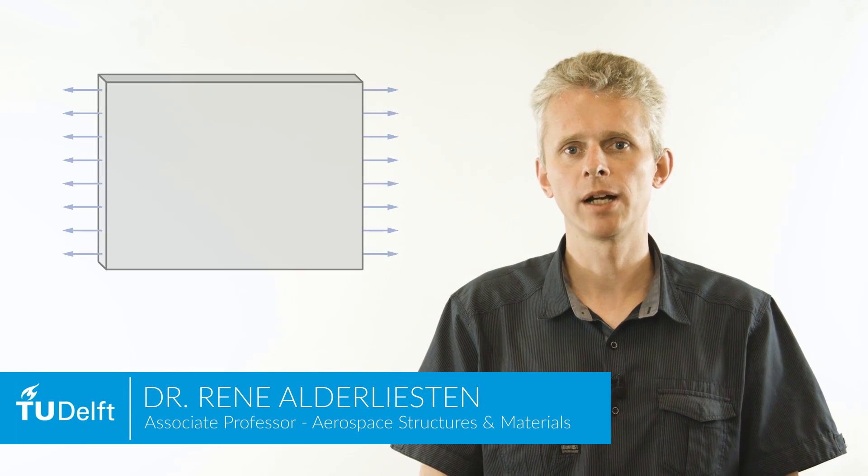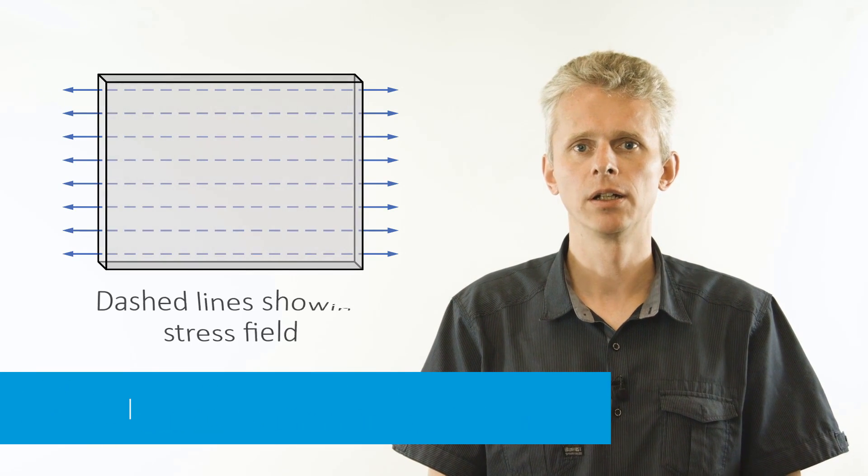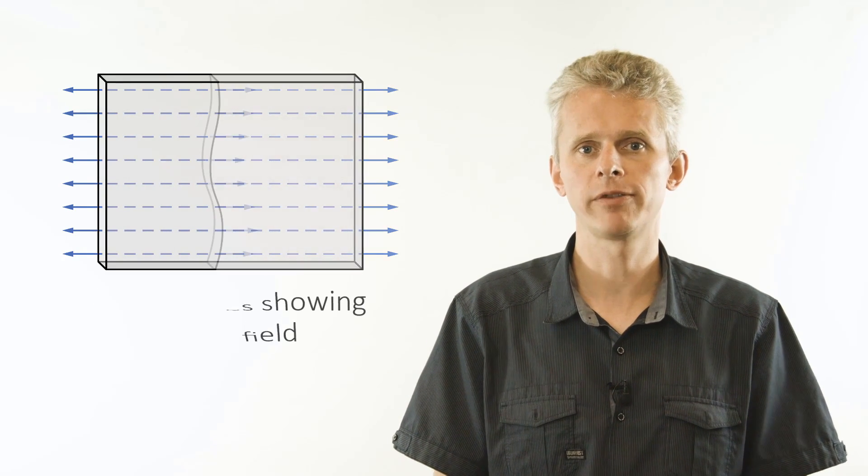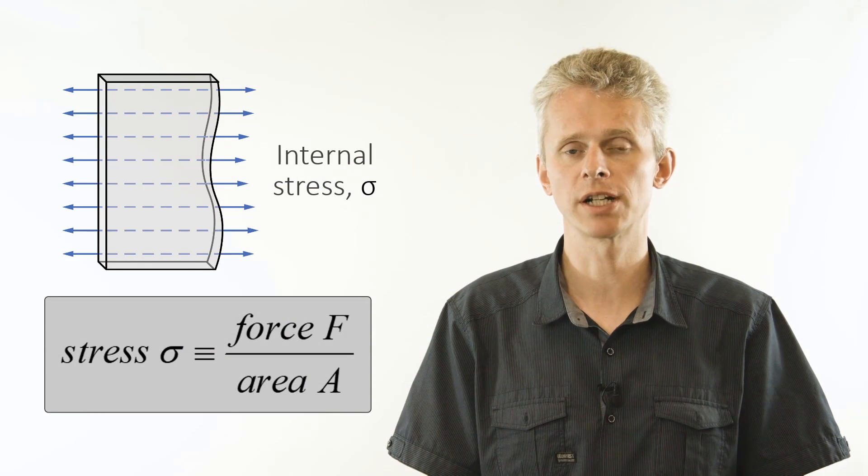Now let us take a flat panel without any cracks or notches. In case of uniaxial loading, the normal stresses are equal everywhere in the panel. These stresses are defined as the uniaxial load divided by the cross-sectional area.